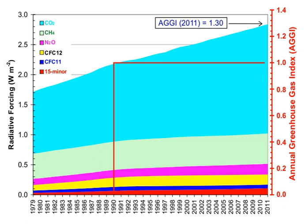One liter of gasoline, when used as a fuel, produces 2.32 kilograms (about 1,300 liters or 1.3 cubic meters) of carbon dioxide, a greenhouse gas. One U.S. gallon produces 19.4 pounds (1,291.5 gallons or 172.65 cubic feet) of CO2.